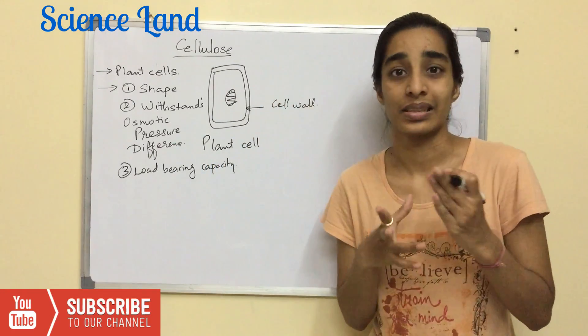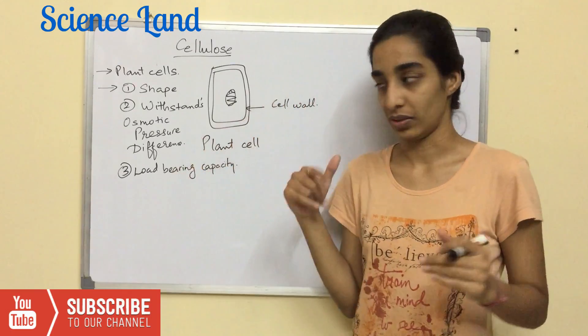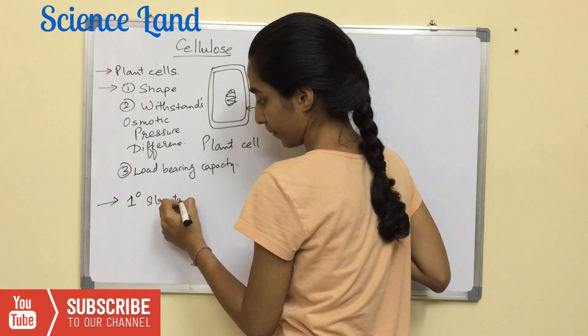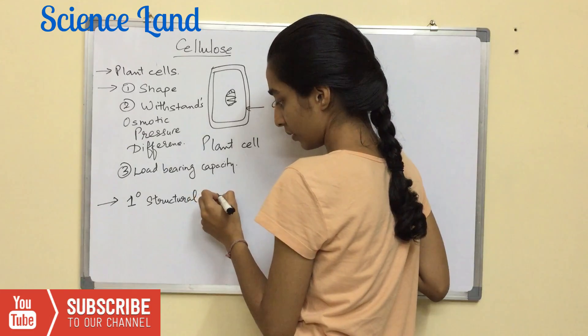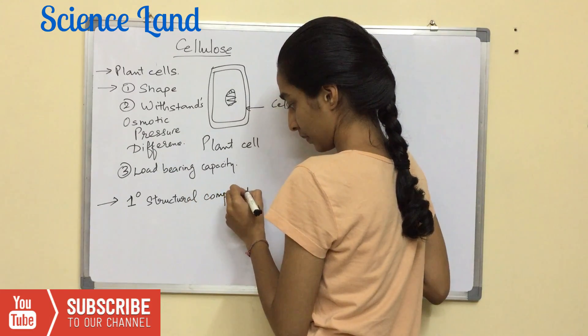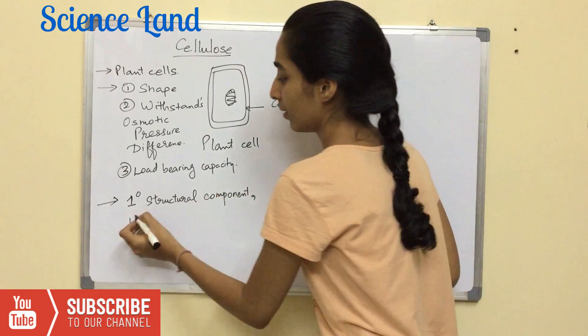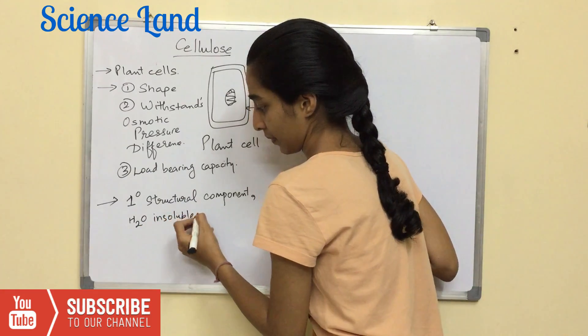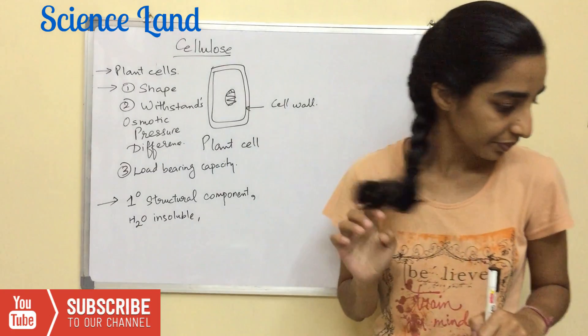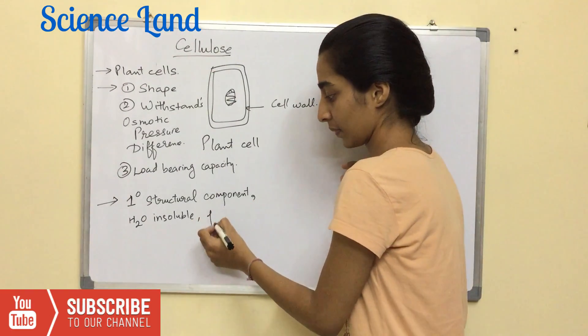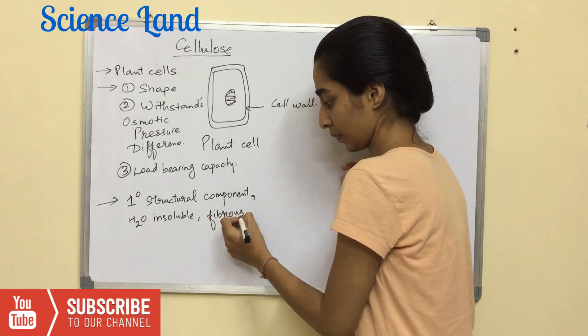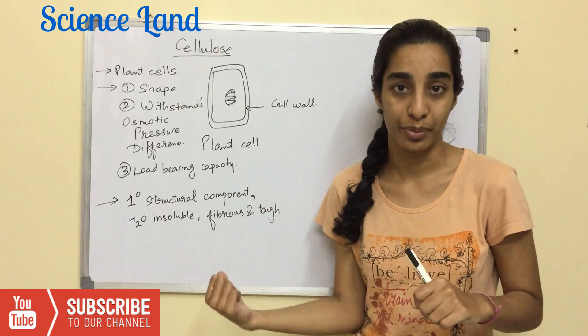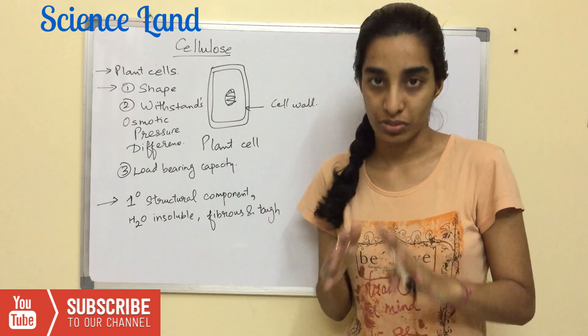Now let's discuss some of the characteristics of the cellulose. It is a primary structural component. It is water insoluble. And the last characteristic is it is fibrous and tough.